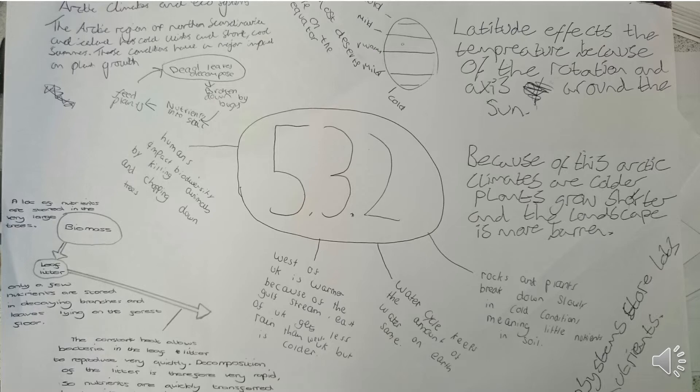Producers are then predated upon by herbivores — things which nibble on them, the vegetarians — known as primary consumers. These in turn are eaten by secondary consumers, which could be an omnivore of some kind. You'll usually then have a tertiary or top predator, which is usually a carnivore or could be an omnivore. These are all living — biotic — components of the ecosystem.